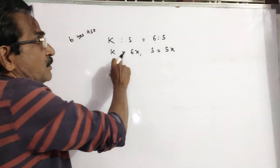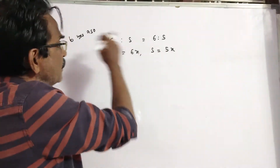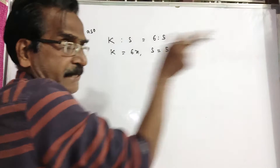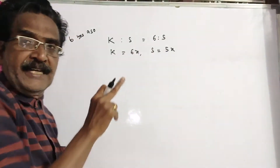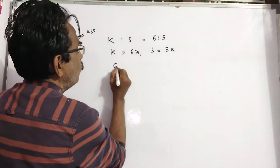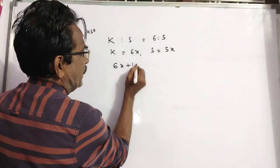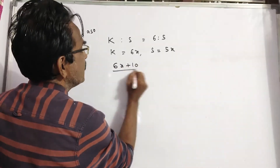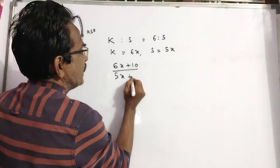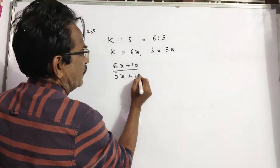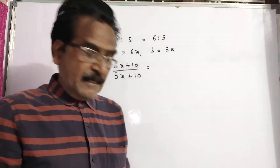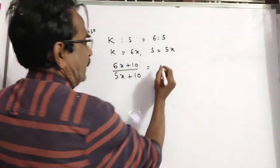These are the ages six years ago. Six years ago to four years hence means a difference of ten years. So now, the age of Kunal is 6X plus ten, and the age of Sagar is 5X plus ten. After four years, the ratio will be eleven to ten.